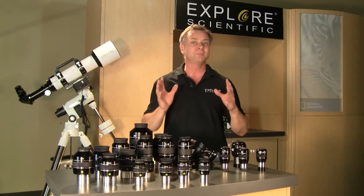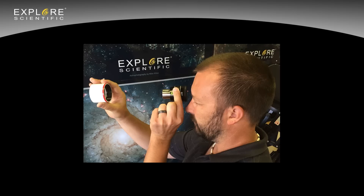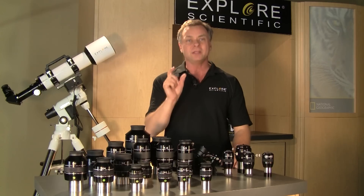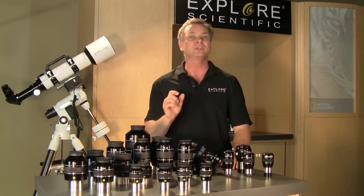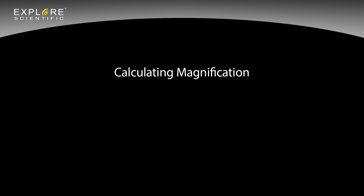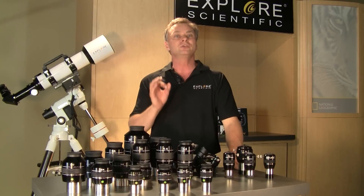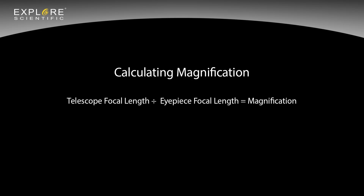So how does magnification work? The focused image from the telescope lens is being magnified by the eyepiece. In this case, the telescope focal length is about 160 millimeters and the eyepiece is only 20 millimeters, producing 8 times magnification. To calculate magnification: take the telescope focal length in millimeters divided by the eyepiece focal length in millimeters. Or you can take the telescope aperture in millimeters and divide it by the exit pupil in millimeters — both equal magnification.